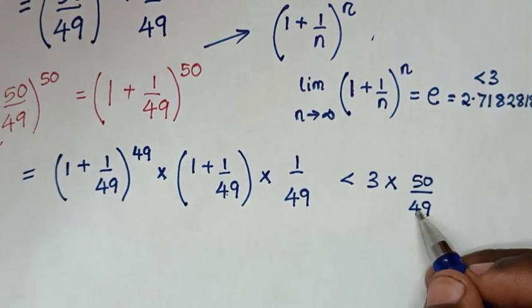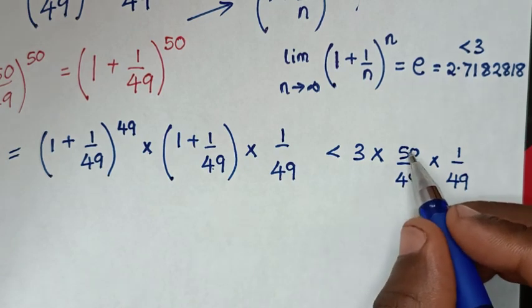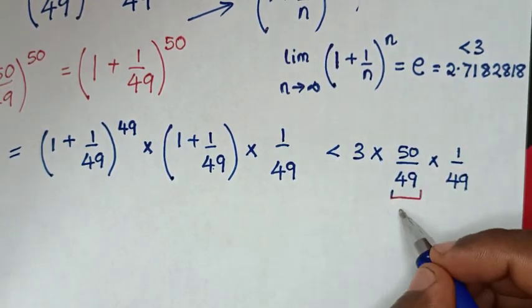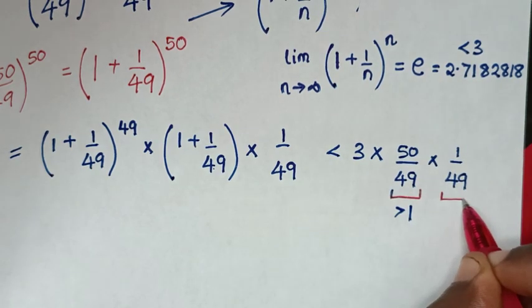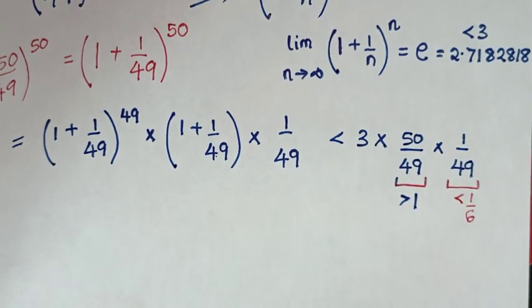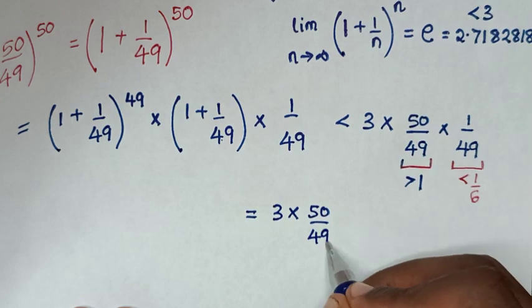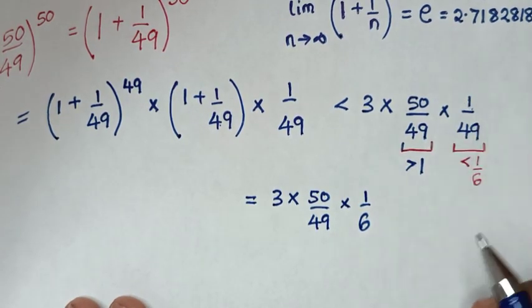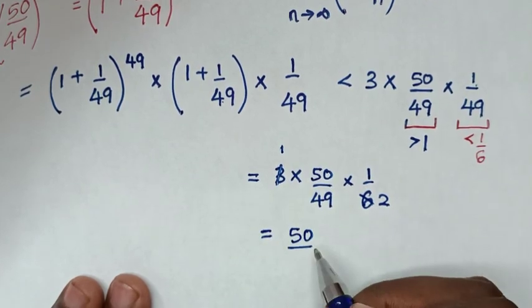Now (1 plus 1 over 49) equals 50 over 49 as an improper fraction, times 1 over 49. From here, 50 over 49 is greater than 1, and 1 over 49 is less than 1 over 6. So to simplify: 3 times 50 over 49 times 1 over 6 — the 3 and 6 cancel by dividing by 3 — giving 50 over 49 times 2.